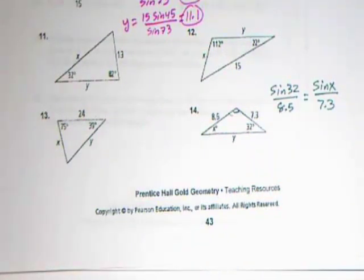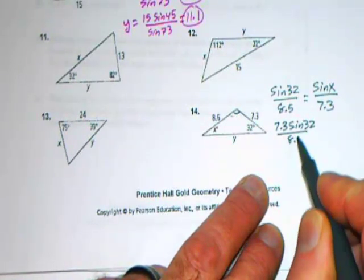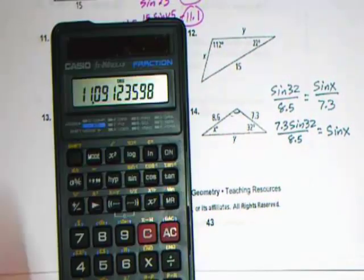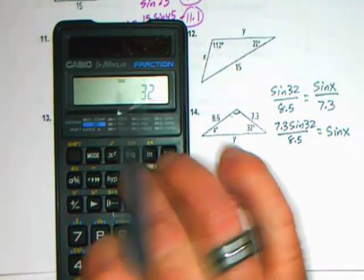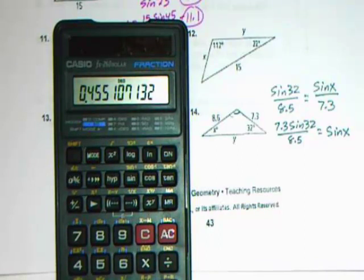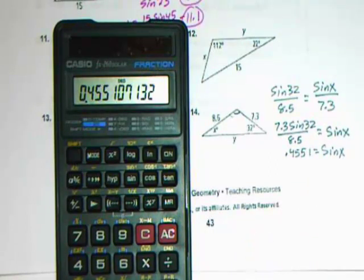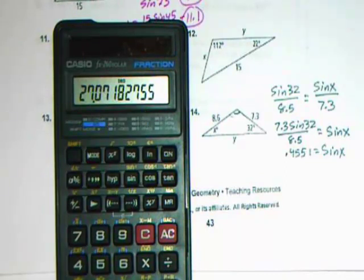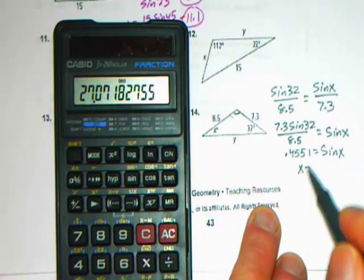Sine of 32 over 8.5 is equal to sine of x over 7.3. Cross multiply: 7.3 sine 32 divided by 8.5 equals the sine of x. 7.3 times 32 sine divided by 8.5 equals 0.4551. That's equal to sine of x. So we do inverse sine of 0.4551 and we get 27.07, so 27.1. These all need to be rounded to the nearest tenth, so x is 27.1.